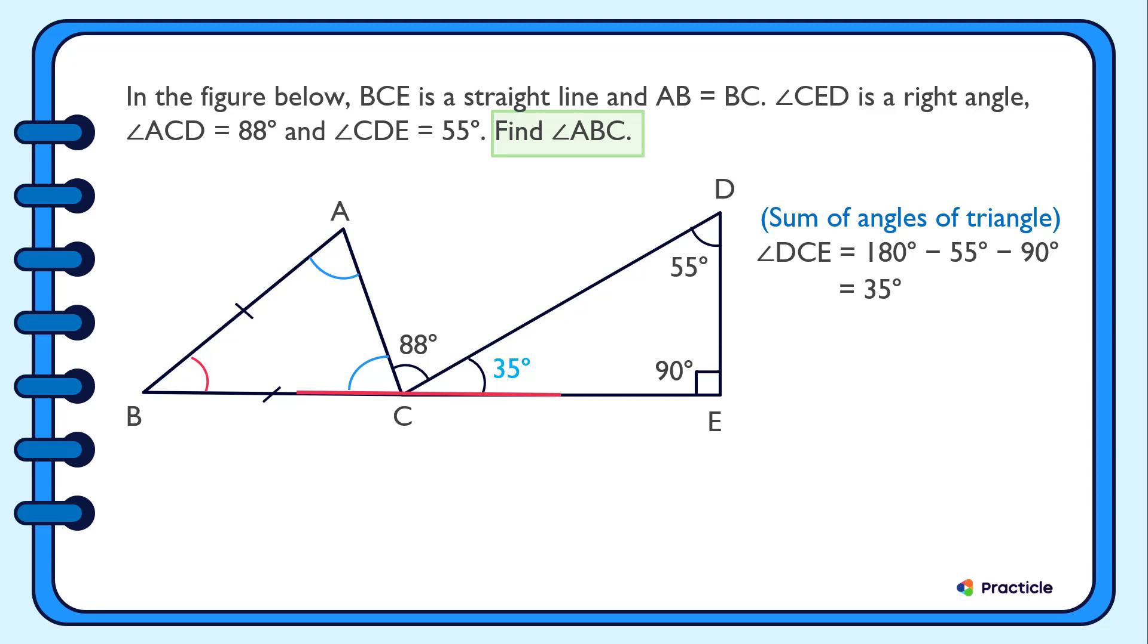Following so far? Then how can we find the value of angle ACB? Well, if you thought of subtracting 88 degrees and 35 degrees from 180 degrees, you are right. This gives us a value of 57 degrees.